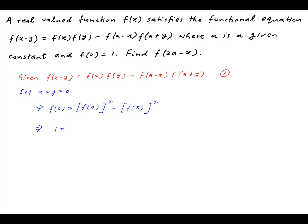Now we are given that f(0) equals 1, and therefore this equation becomes 1 equals 1 minus f(a) squared. The 1 cancels out and therefore we are left with f(a) squared equals 0, which implies that f(a) equals 0.